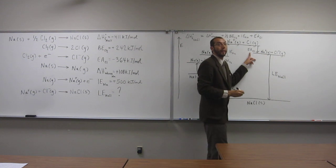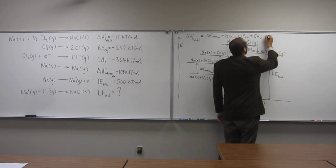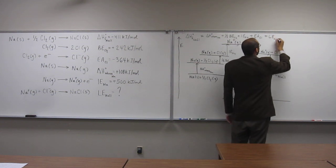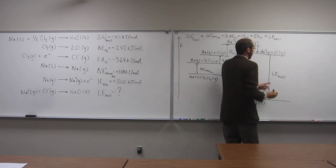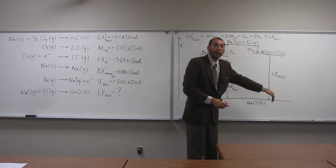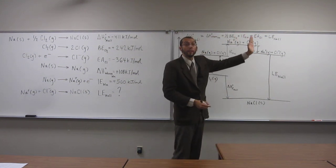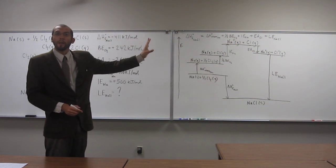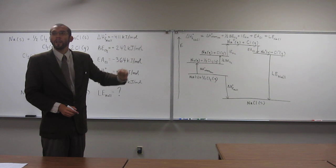plus the electron affinity of chlorine. Remember, that's going to be a negative number, though. Plus the lattice energy of sodium chloride, another negative number. So any of these down processes are negative numbers, any of the up processes are positive numbers. Is everybody okay with setting up that equation there?